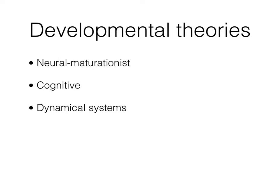There are three primary theories of motor development: neural maturationist theory, cognitive theory, and dynamical systems theory. These theories are summarized really nicely in your Campbell text. Let's begin by discussing the neural maturationist theory.